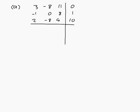So it becomes the matrix B which was 3, minus 8, 11, 0, minus 1, 0, 8, 1, and 1, minus 4, 2, 5.